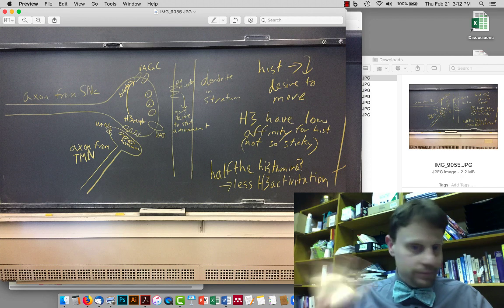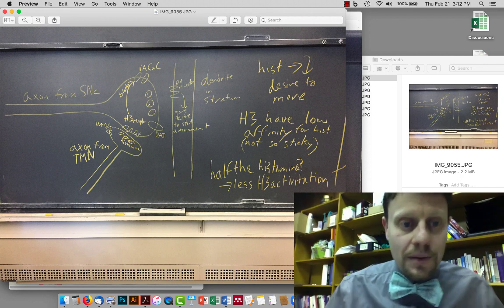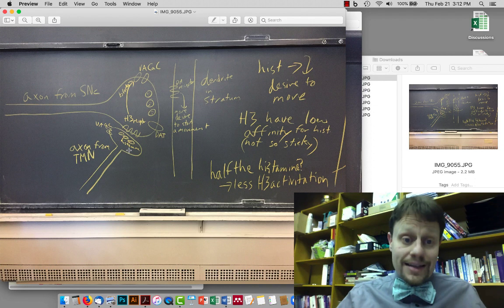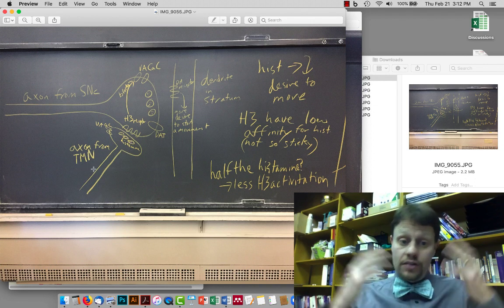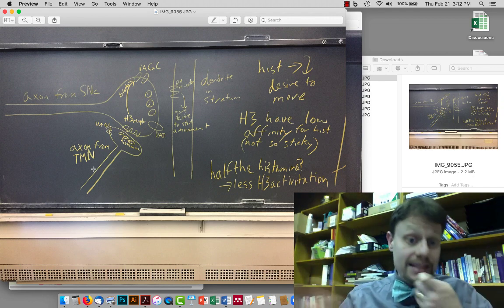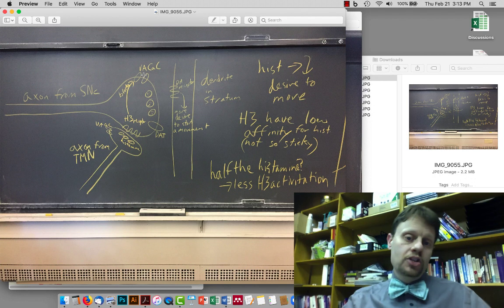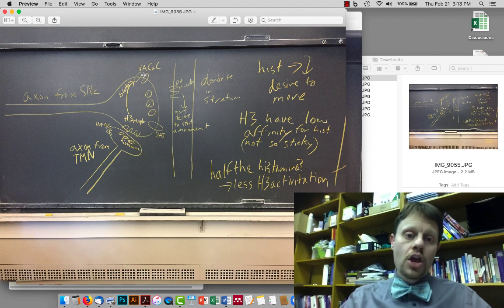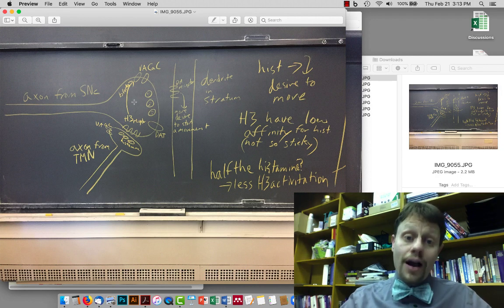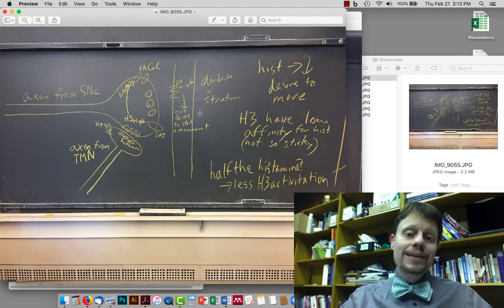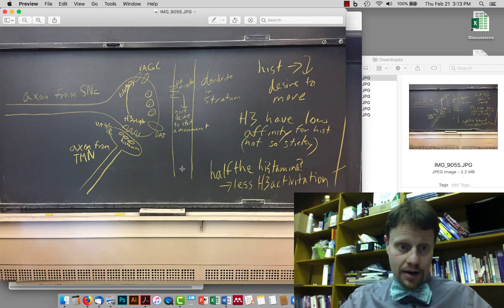H2s aren't in the brain. Names are always confusing. That's just what we have to deal with. When histamine is released here, so when this axon from the tubero-mammillary nucleus is active and there's action potentials and calcium comes in and histamine gets released, that histamine binds to the histamine receptors. It turns on an internal signal in the presynaptic terminal that blocks the voltage-activated calcium channels. You should remember that voltage-activated calcium channels are necessary to release neurotransmitter, and so if we block the calcium channel, we are going to get less neurotransmitter released, which means less dopamine, which means less desire to move.